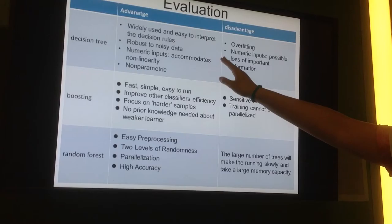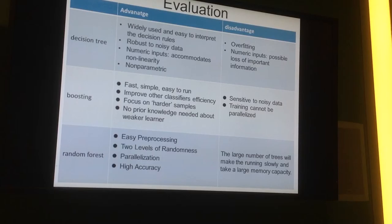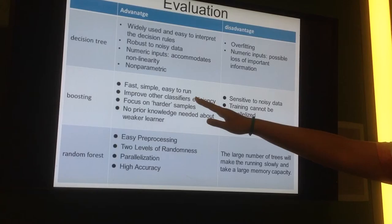The advantage of the decision tree is it is quite easy to use and easy to interpret the decision rules and is robust to noisy patterns. And it accommodates non-linearity and is non-parametric. The disadvantage of the decision tree is overfitting, and the numeric values may cause some important information loss.